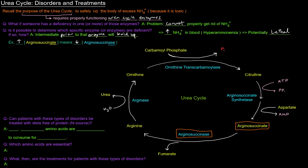So, can patients with these types of disorders be treated with diets free of protein or free of a nitrogen source? The answer is no, because there are essential amino acids that are necessary to consume for survival. Essential amino acids are amino acids that your body cannot synthesize. The non-essential amino acids are ones your body can synthesize. You must consume essential amino acids in your diet because you need all 20 amino acids to survive, and you can't make the essential ones yourself. So having a diet free of protein or nitrogen would be free of essential amino acids, which would be bad — survival would not be possible.